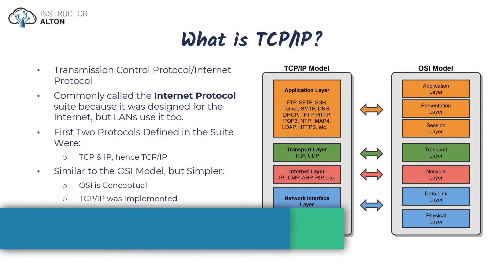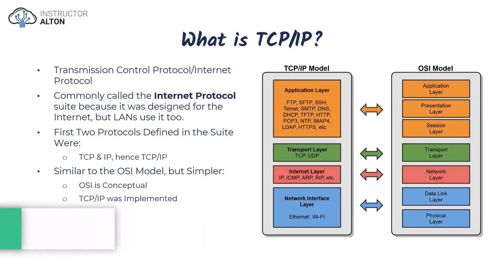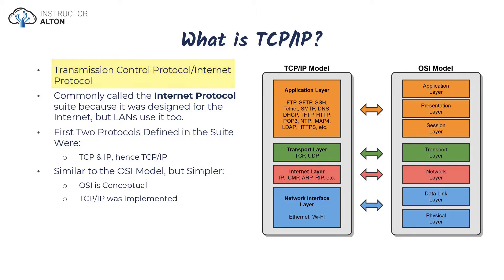Let's kick off our discussion with a quick recap. We've already talked about both the OSI model and the TCP/IP model. TCP/IP stands for Transmission Control Protocol slash Internet Protocol. The OSI model was designed but never implemented — it's a conceptual teaching model. TCP/IP, on the other hand, was implemented and is by far the most common and widely used protocol.